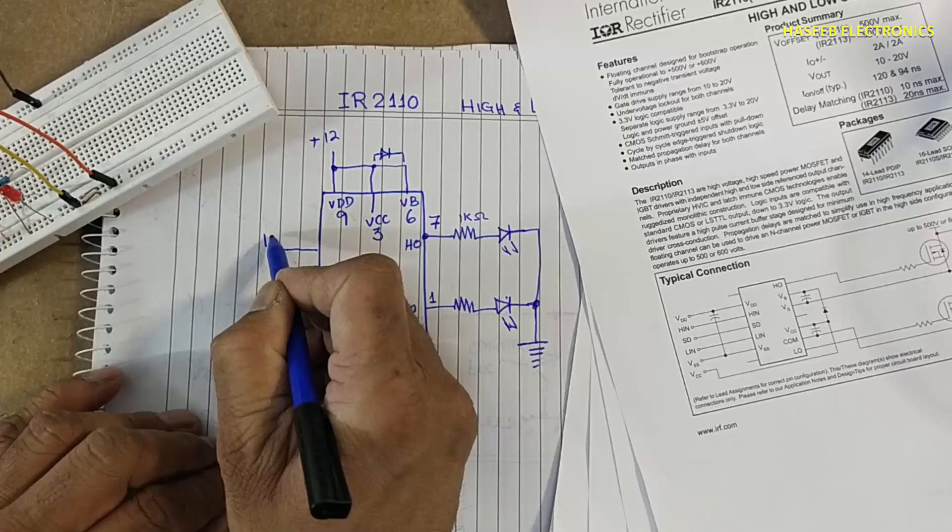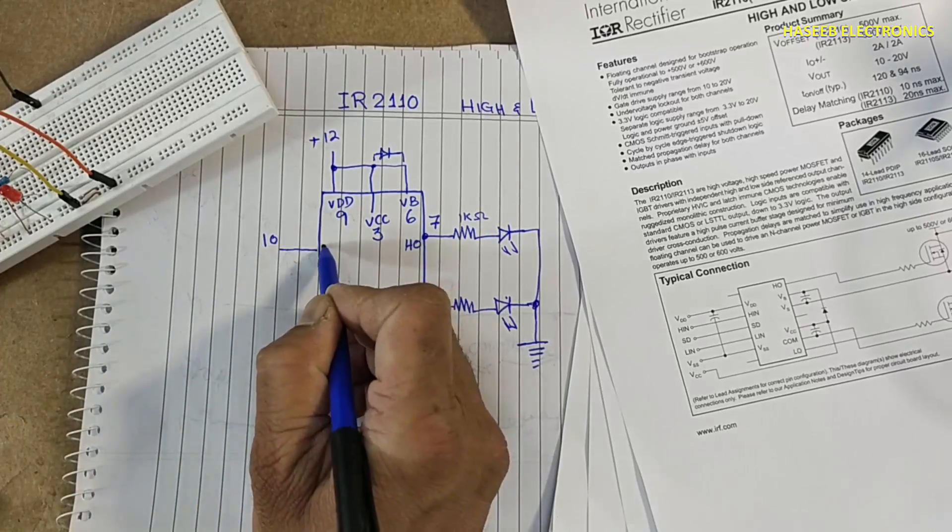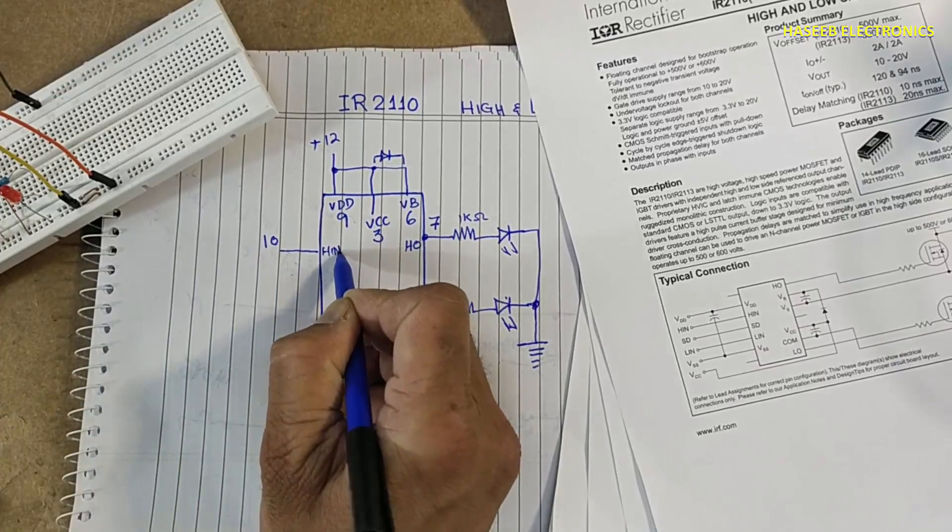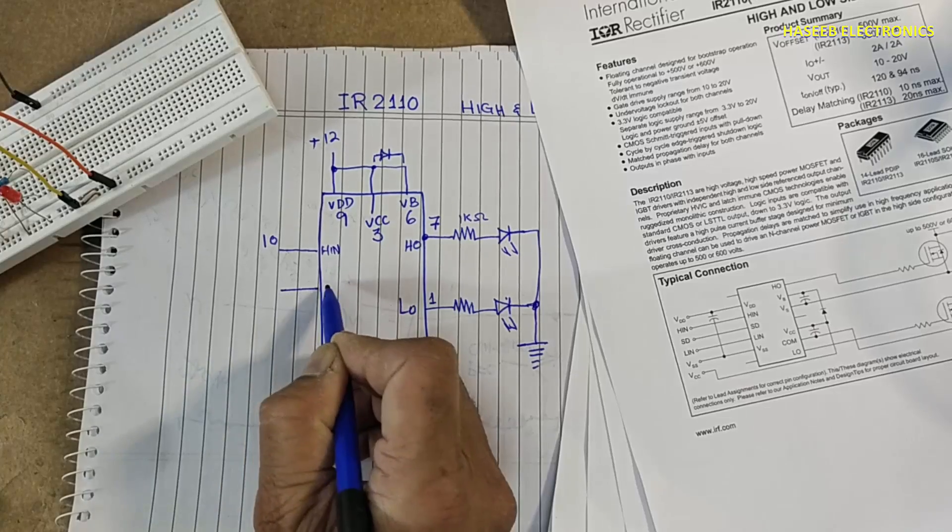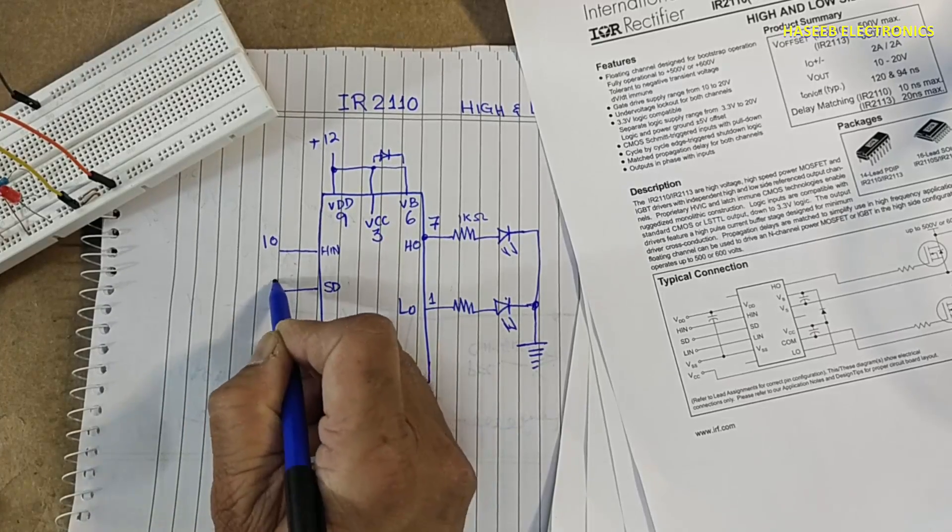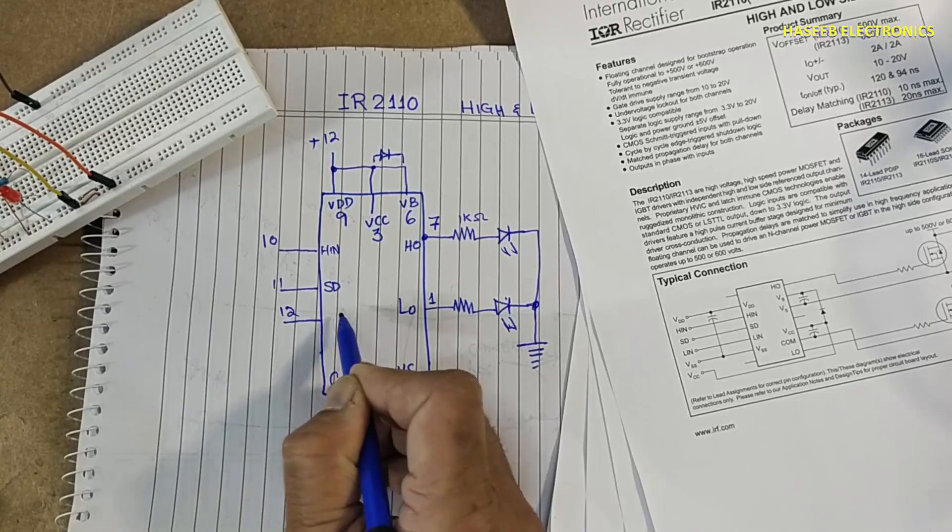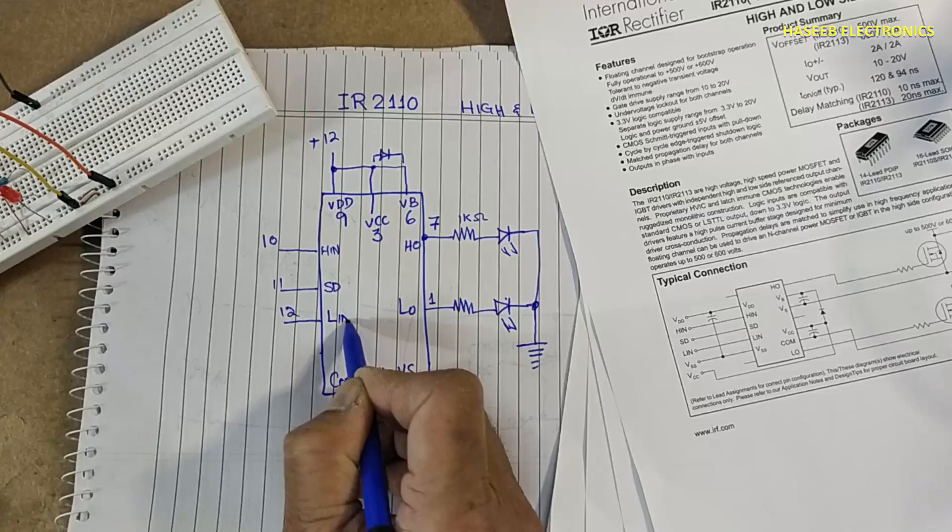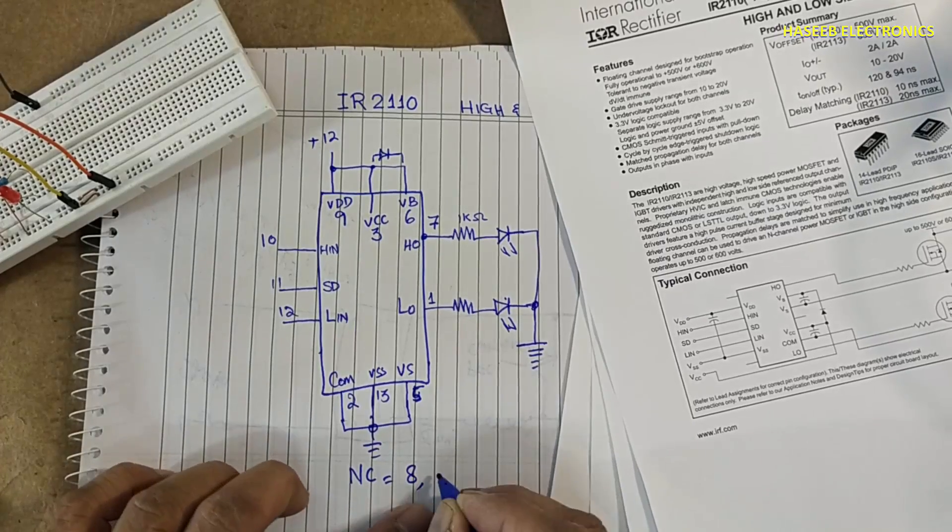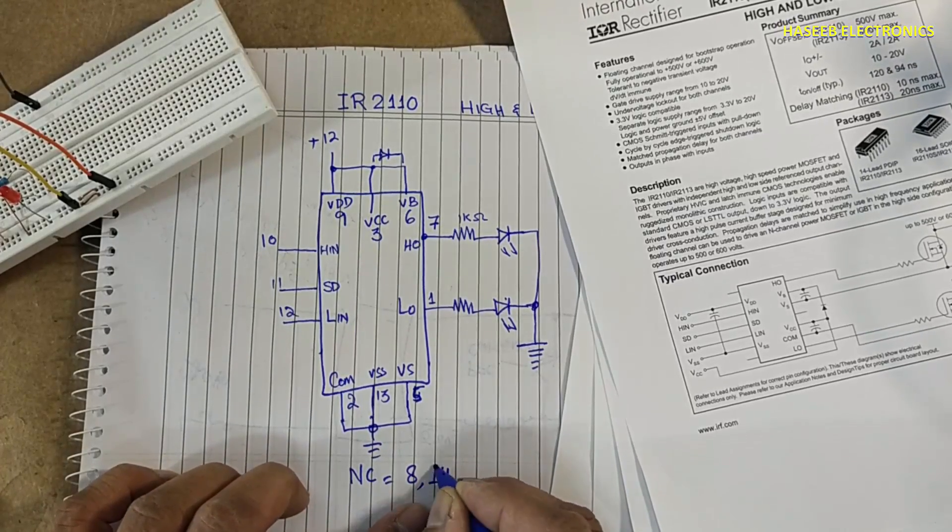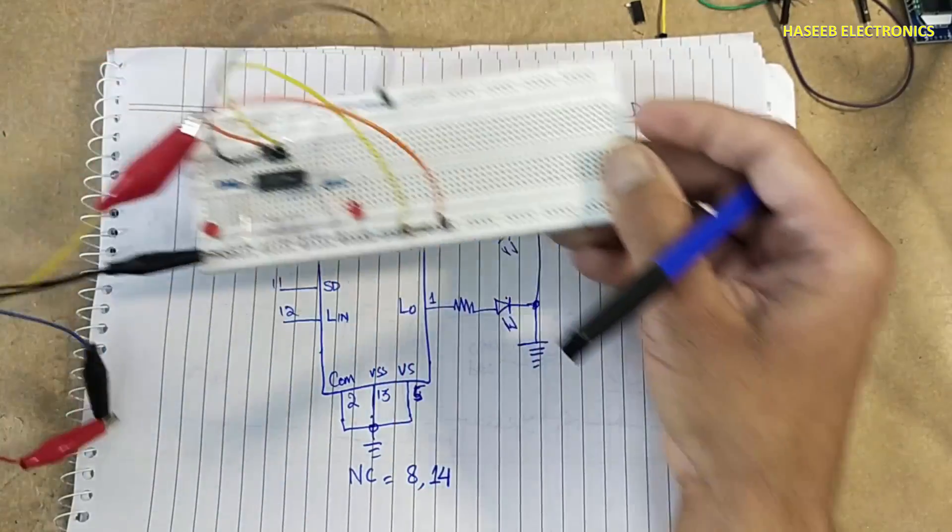Pin number 10, that is high in. Pin number 11, shut down pin. Pin number 12, low side input. Pin number 8 and pin number 14 are not connected. Let's check this circuit.